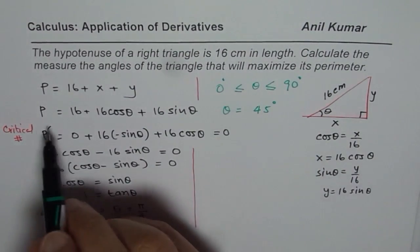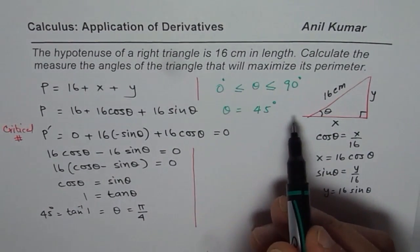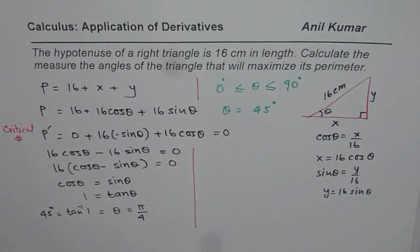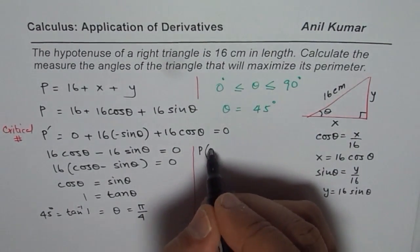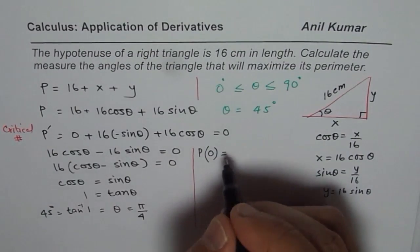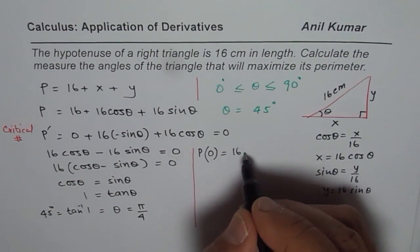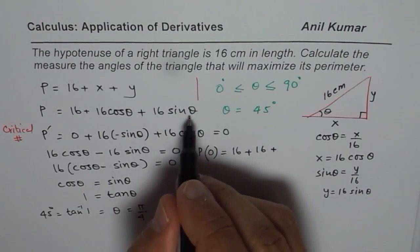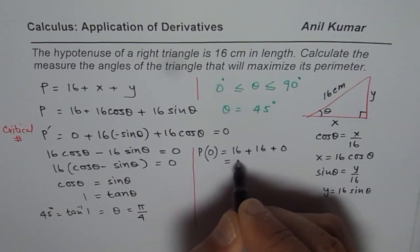So we can find the value of perimeter for all the three points and then verify which is the largest. So let us calculate. Perimeter for 0 will be equals to 16 and cos of 0 will be 1. So, we get 16 plus 16 plus sin of 0 is 0, so that gives us 32.